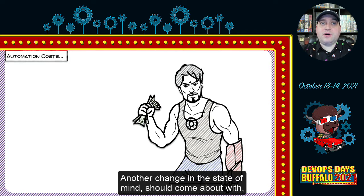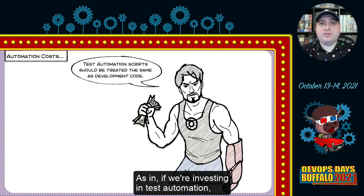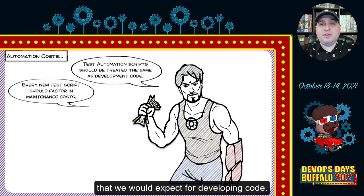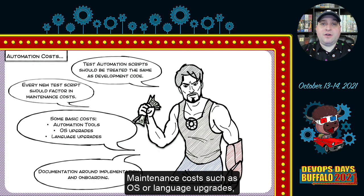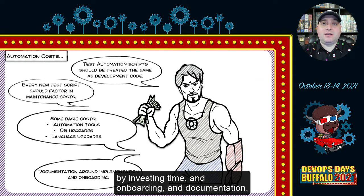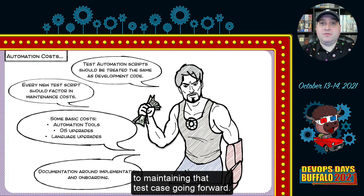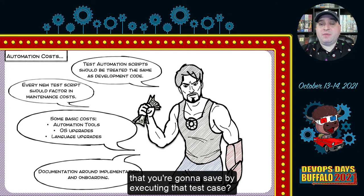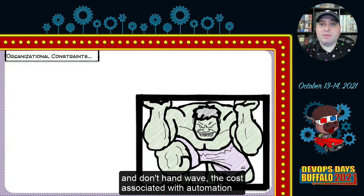Another mindset shift should come with how we think about automation versus development code. If we're investing in test automation, it should receive the same care as development code — including maintenance costs such as OS or language upgrades, potentially purchasing third-party software, and the cost of onboarding, documentation, and overall maintenance of those test cases. Every time you merge a test case into main, you are committing to maintaining that test case going forward. Don't hand-wave the costs associated with automation when coming up with a return on investment.